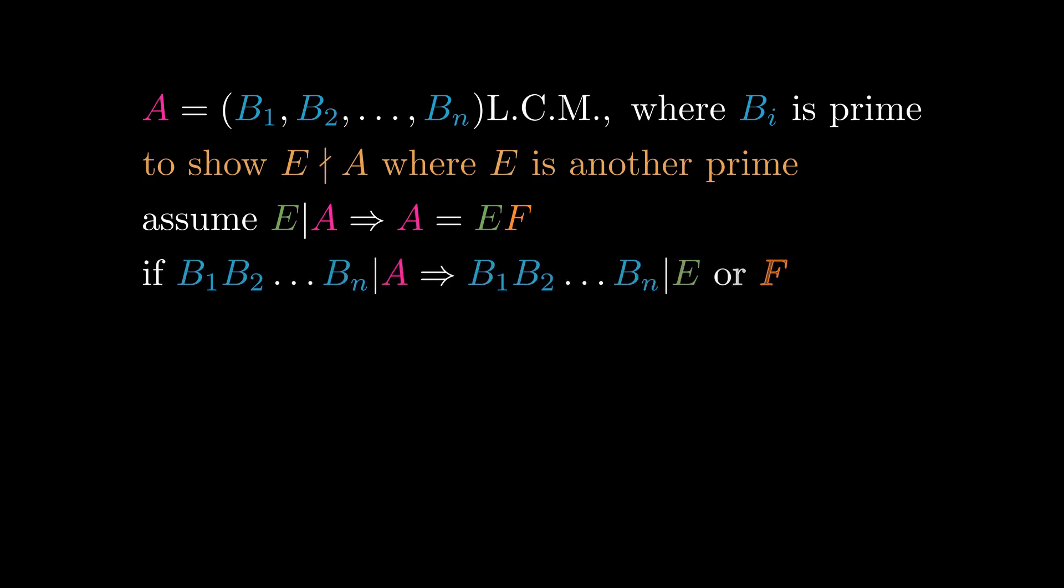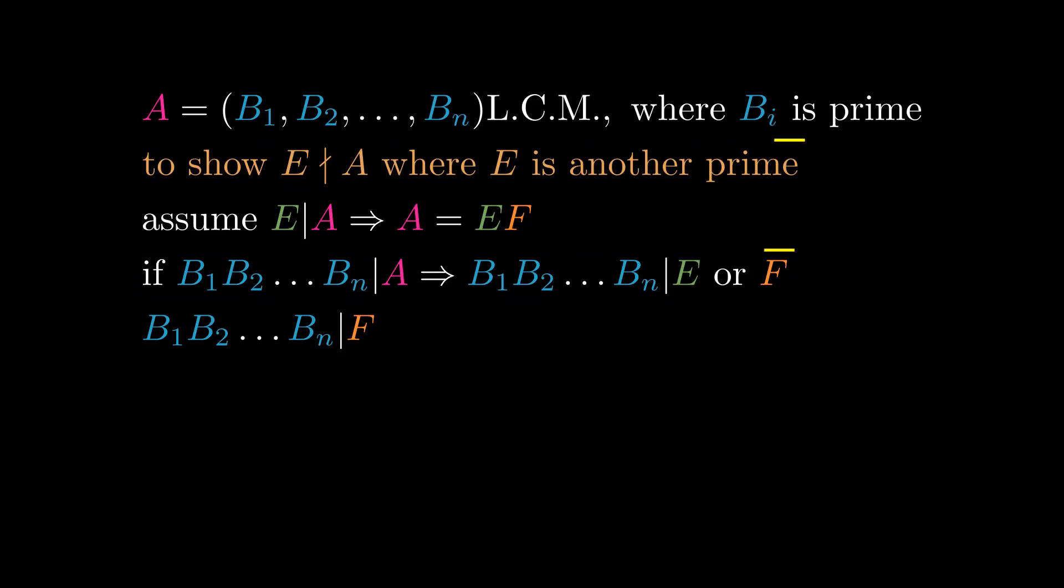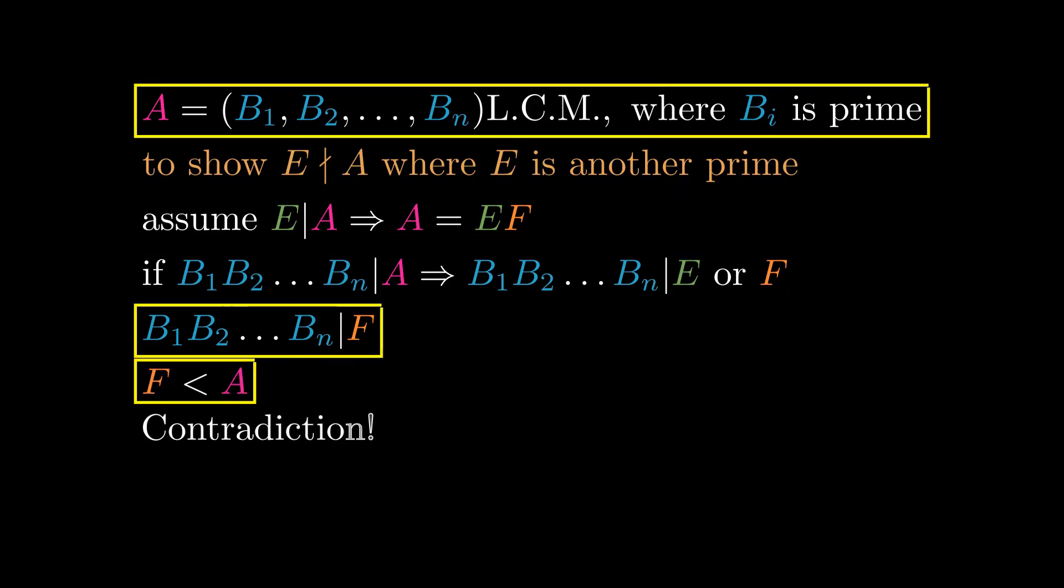Proposition 7.30 says that any prime that measures a will also measure e or f. They will measure f because e is prime, but f is less than a, which contradicts that a is the least common multiple of the primes.